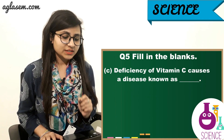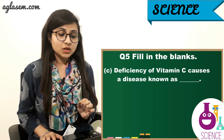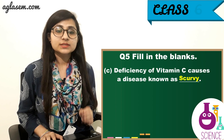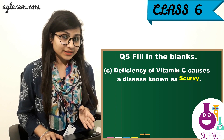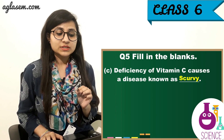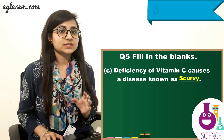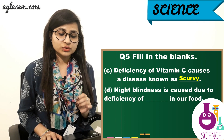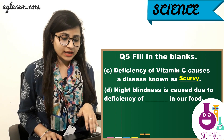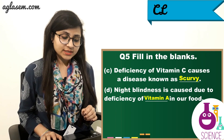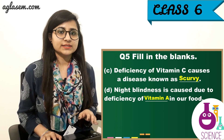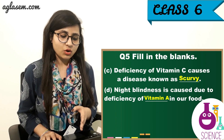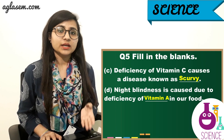C) Deficiency of Vitamin C causes a disease known as scurvy. D) Night blindness is caused due to deficiency of Vitamin A in our food.